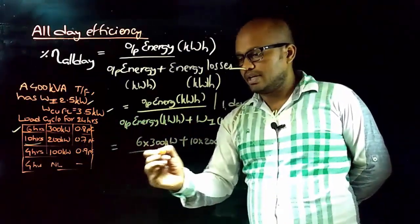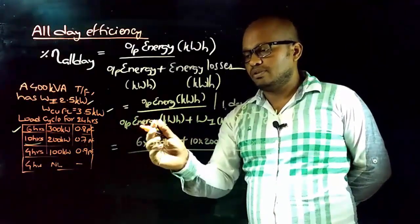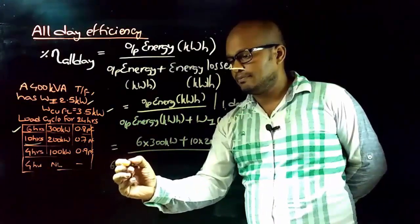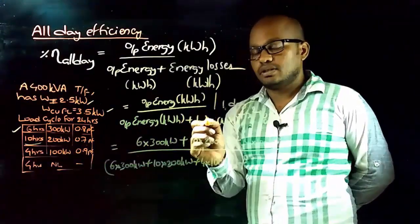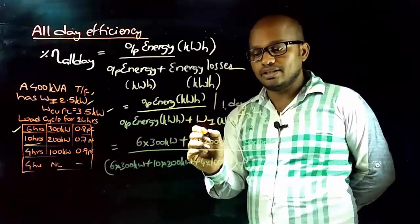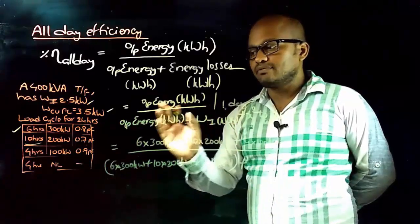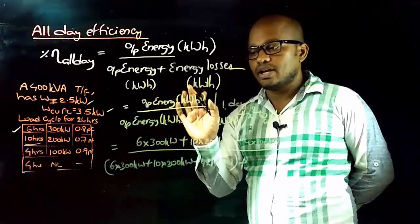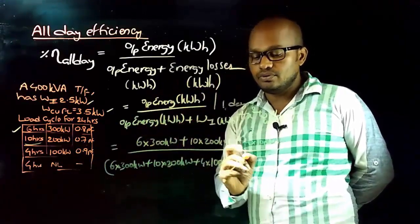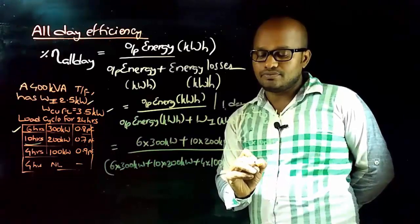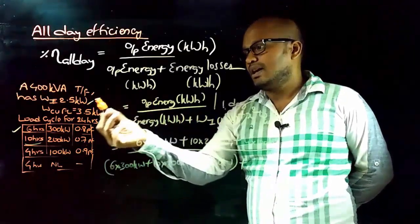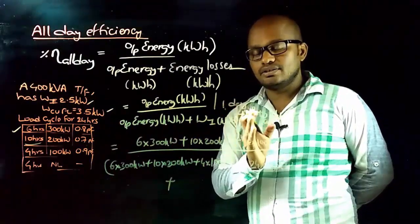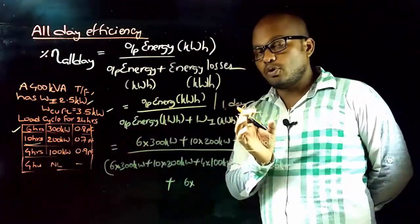This total output energy is divided by the same output energy plus the energy losses. An important point to keep in mind: iron losses are present for the whole 24 hours whether the transformer is loaded or not. So you must include 24 × 2.5 kilowatts for iron losses in the denominator.